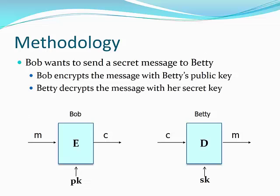When Betty receives the message, she will be able to decrypt it using her corresponding private key, and then read the unencrypted version of the message. Betty can also respond to Bob by using his public key, and Bob will use his private key to decrypt and read the message. The nice thing is that all of this public and private key activity happens in the background and is mostly transparent to the user if everything is configured correctly.